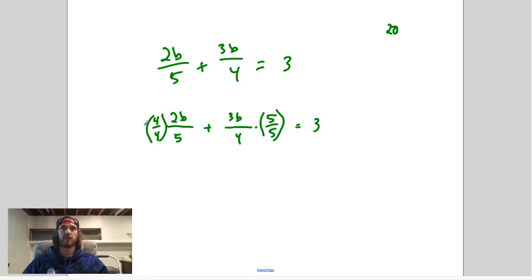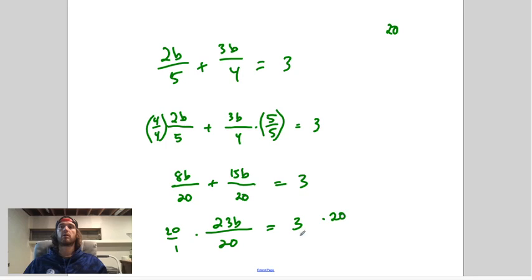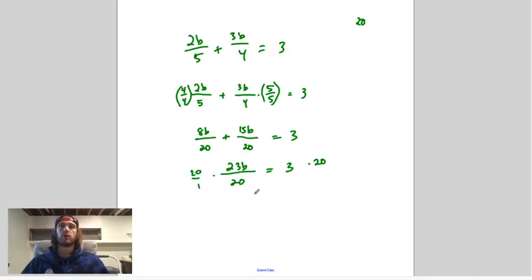So we're going to do this 2b over 5, I'm going to multiply this by 4 over 4. The reason I chose 4 over 4 is it'll give me this denominator 20. And then we're going to add that to 3b over 4, I'm going to multiply this one by 5 over 5, which equals 3. Now I don't need to multiply the other side by anything, because all I've done is taken this term and multiplied by a clever form of one. Anything times one is itself. So we're just creating an equivalent fraction. And you'll get 8b over 20 plus 15b over 20 is equal to 3.